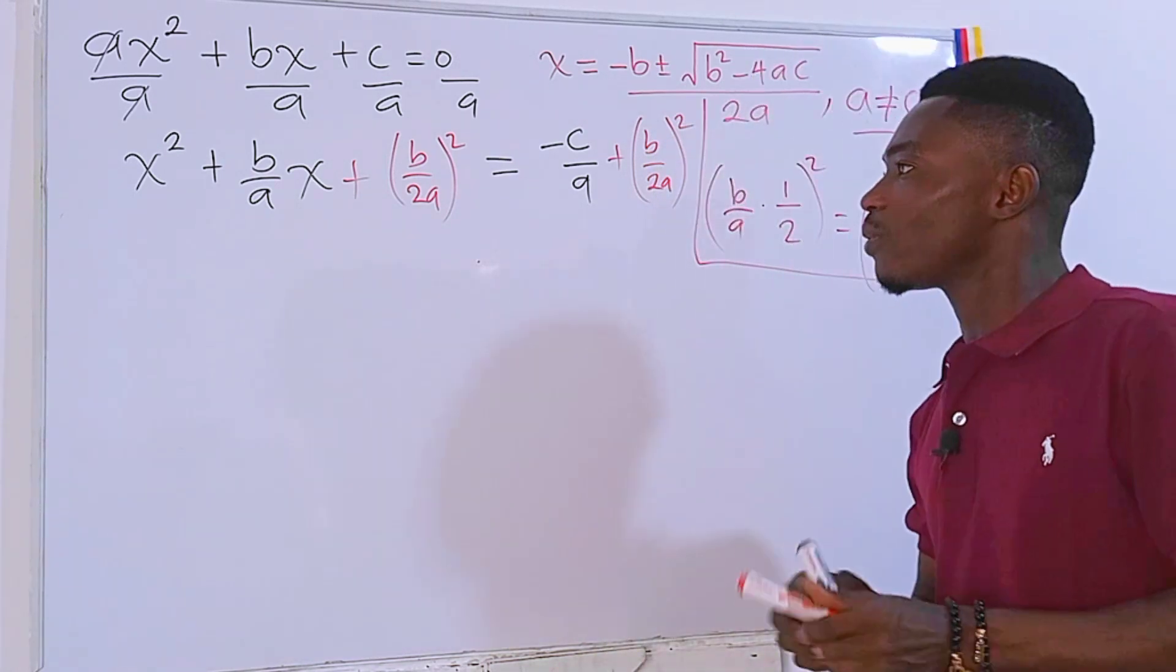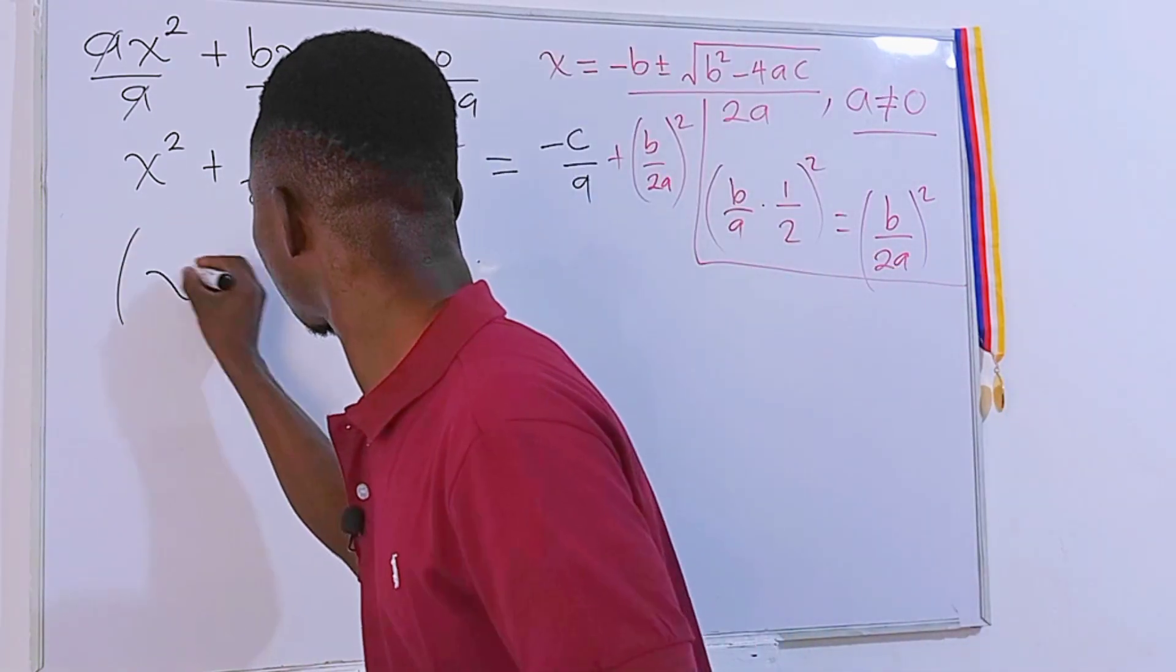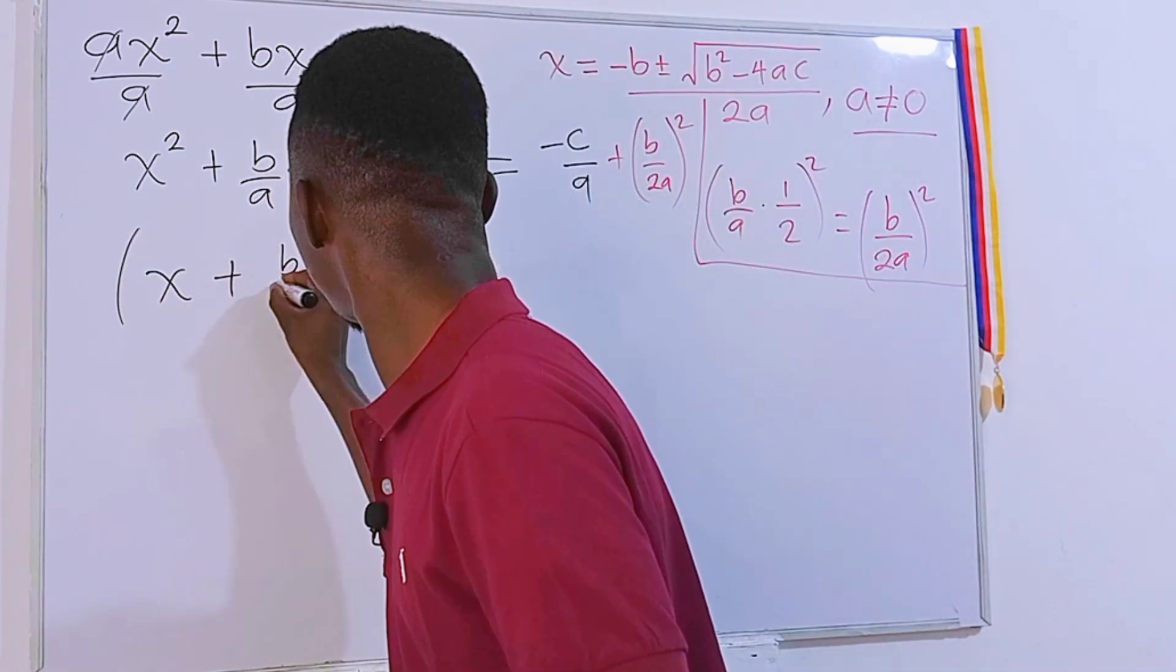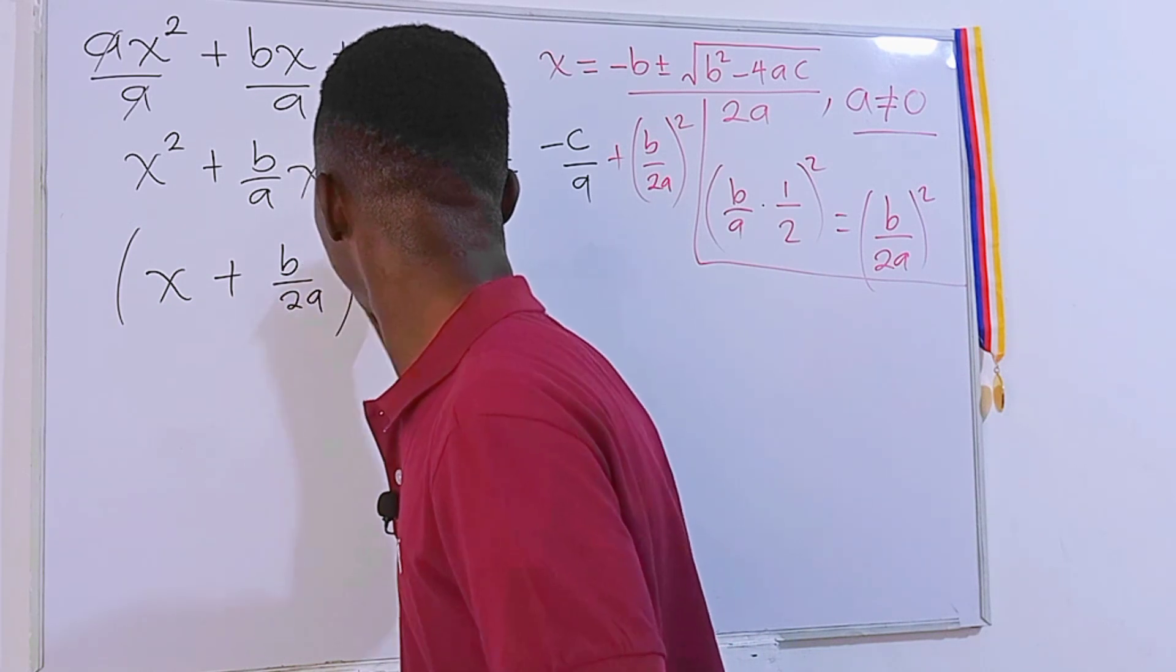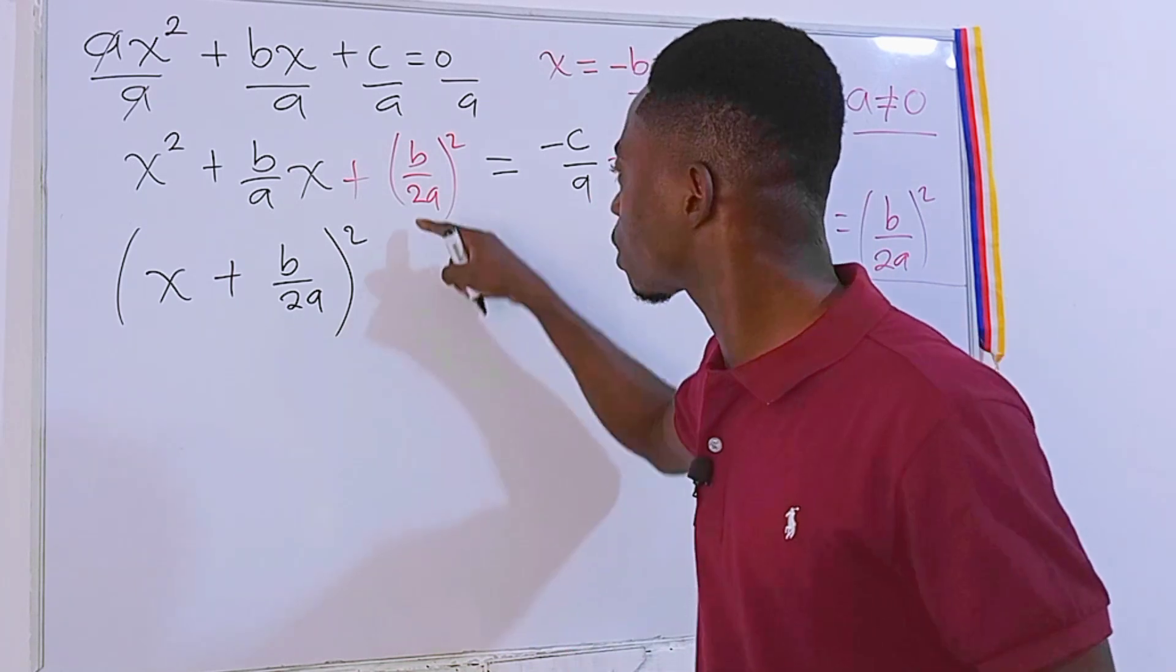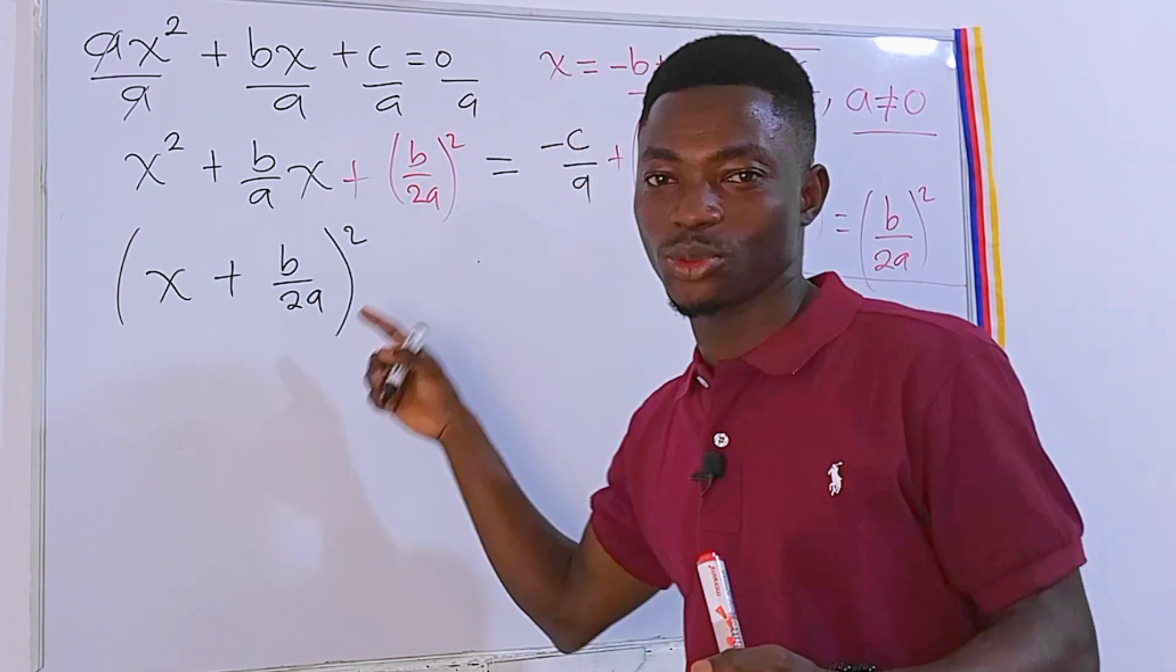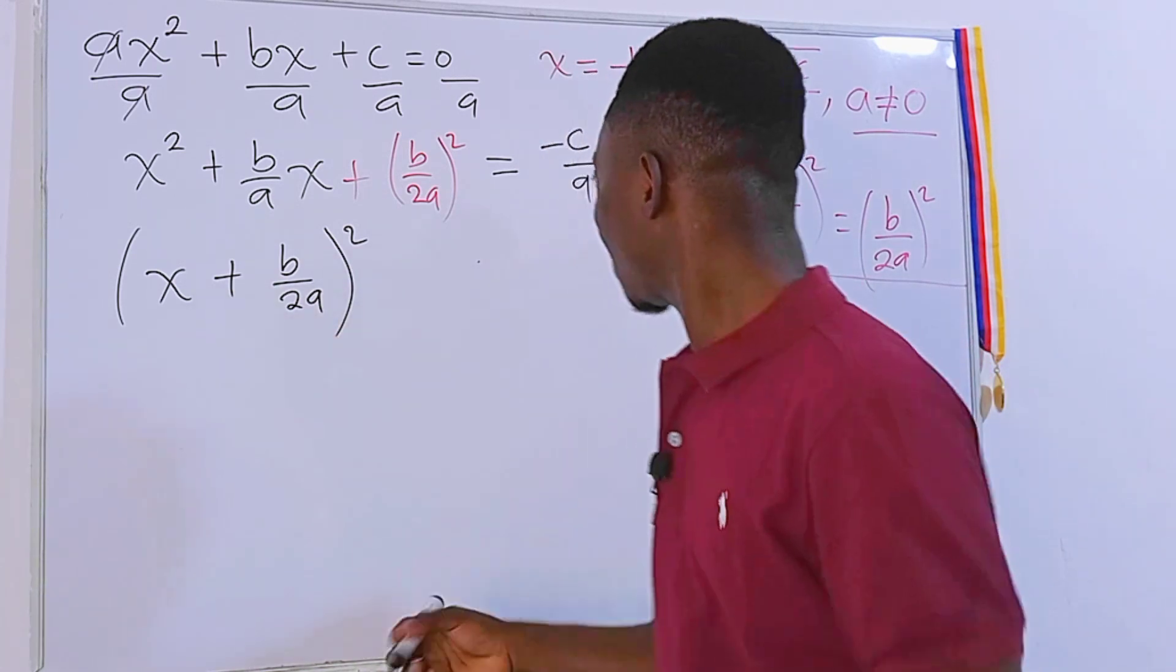Cool. Now we can see that this is a perfect square which could be written as x plus b over 2a squared. This is because if you expand this one, you'll still be getting this back. So it seems like we have done nothing to the left hand side of the equation. Easy.